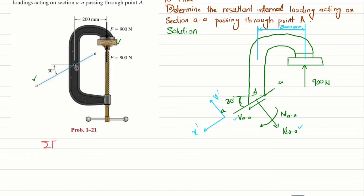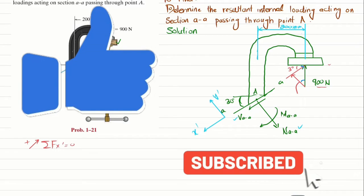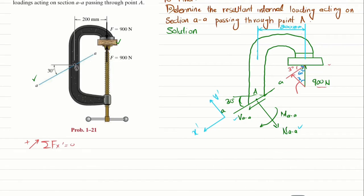The first equation of equilibrium is that the sum of all forces along the X-dash direction must be equal to zero, with force in this direction taken as positive. The 900 N force acts perpendicular to this surface. If I draw a line at 30 degrees with the horizontal, the 900 N will have two components: one equal to 900 cos 30° and the other equal to 900 sin 30°.